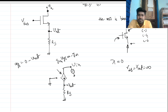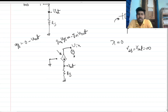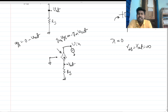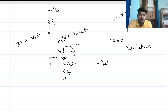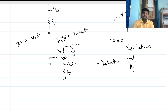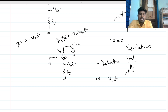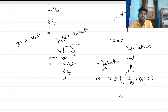We can replace this as minus gm times Vout. Now for Vout over Vin, there is only one current path, so: minus gm times Vout equals Vout divided by RS. Solving this, Vout times (1/RS + gm) equals zero, so Vout is always zero.